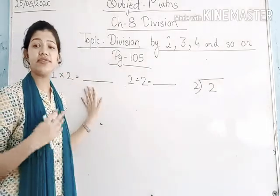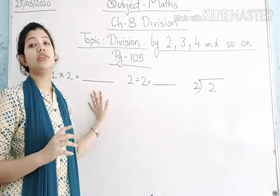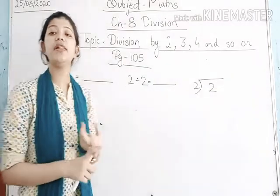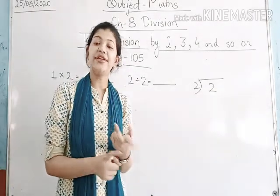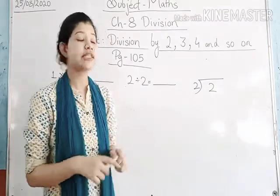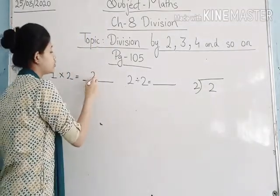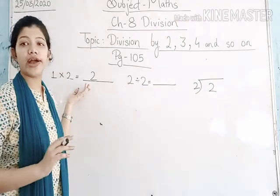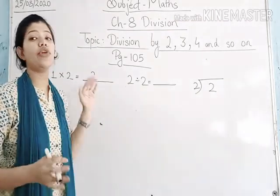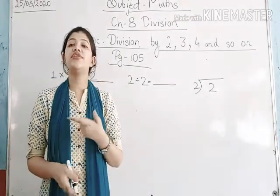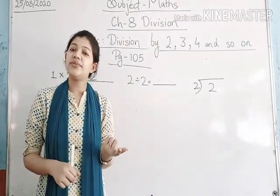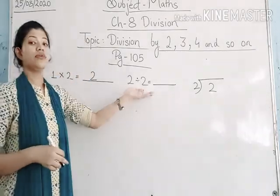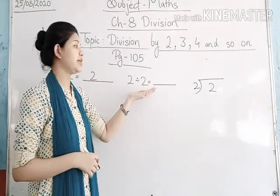This is very easy. I hope everyone knows the table of 1. So 1 twos are — let's read the table: 1 one is 1, 1 two is 2. So the answer is 2. Now we have a complete multiplication form. We know how to convert a division fact from a multiplication fact. So let's fill this missing blank: 2 ÷ 2. Now here, which number will come?